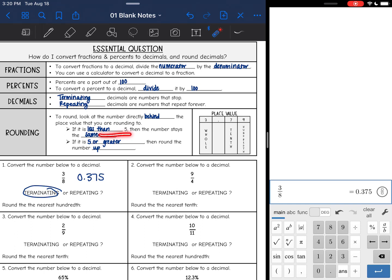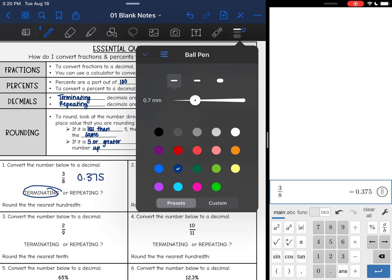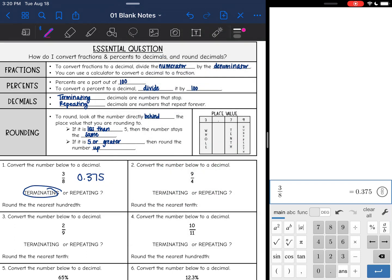If the number is less than 5, then the number you're rounding to stays the same. If it is 5 or greater, then we need to round up. So let's look at what's going on with our first number here.